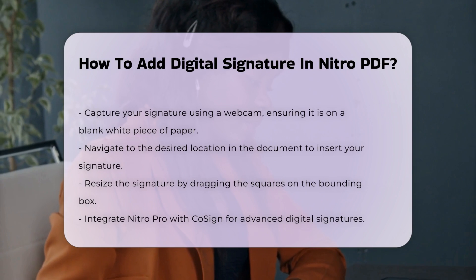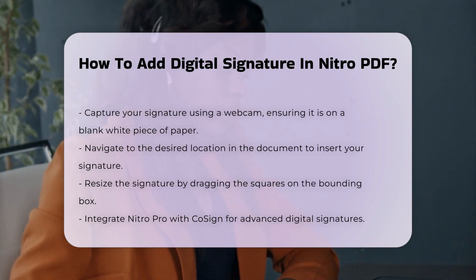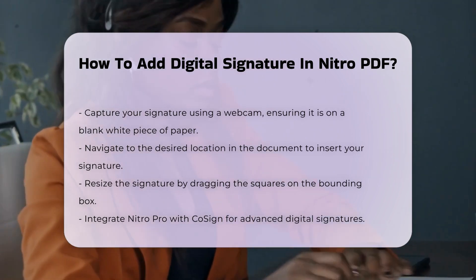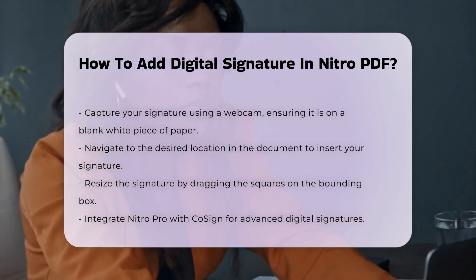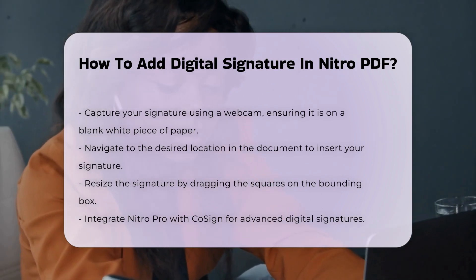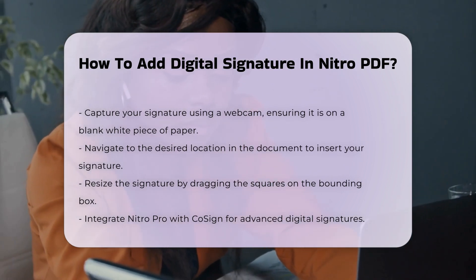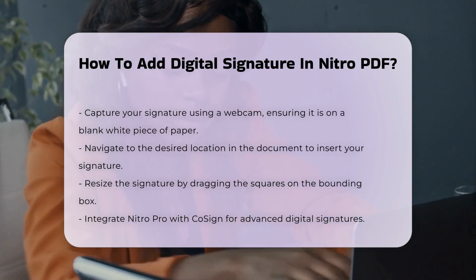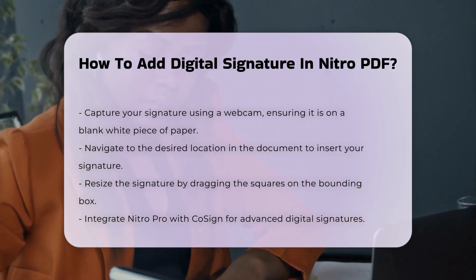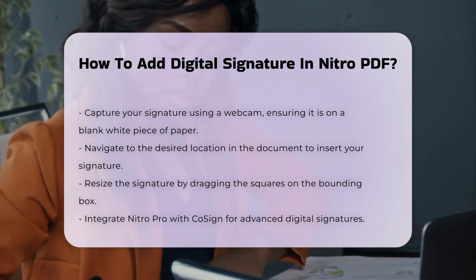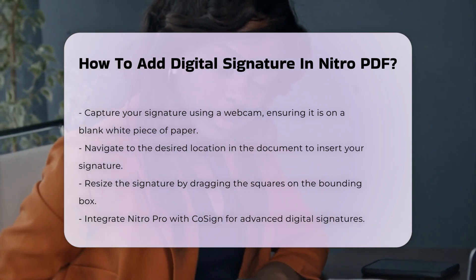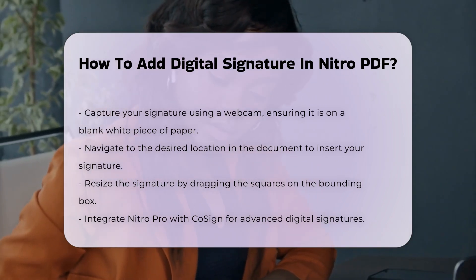Adding the signature to the document. Once you have created your signature profile, navigate to the section of the document where you want to place your signature. Click on this area and your signature will be inserted. You can resize the signature by dragging and dropping the squares on the bounding box.